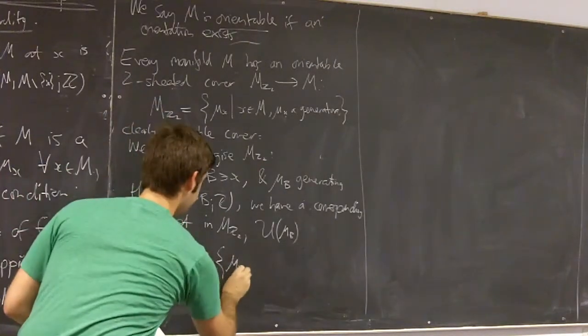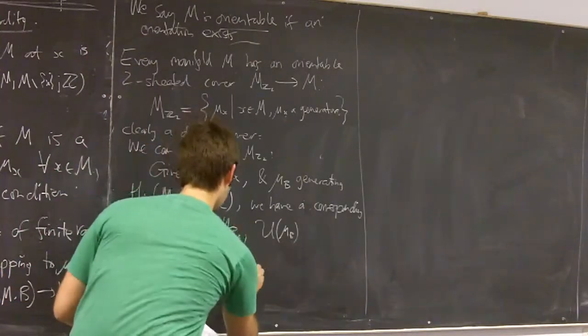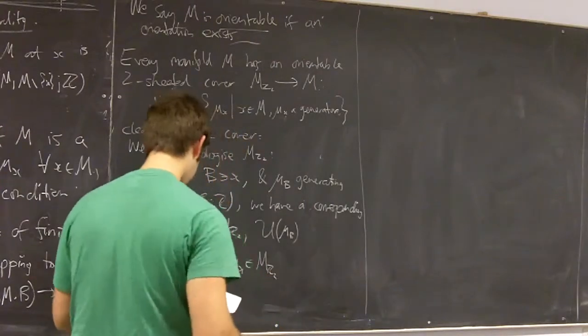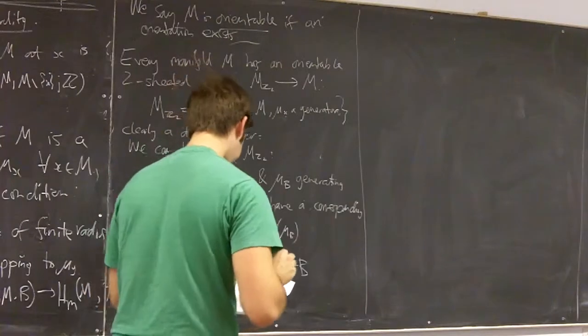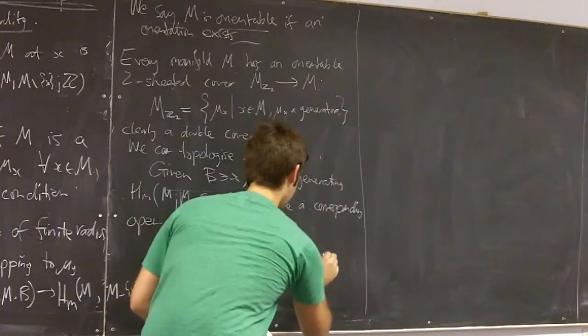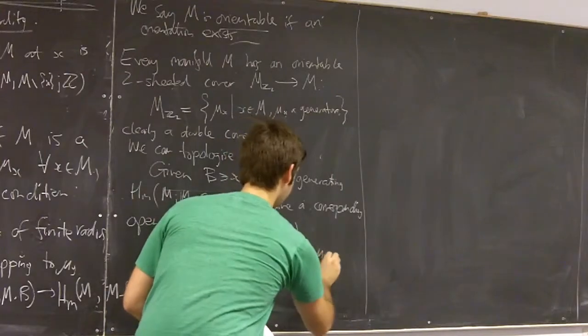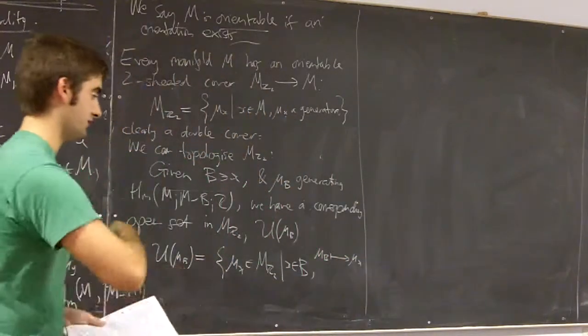it's just the set of all these local orientations μ_X considered as points in this covering space such that X is in the ball B and well μ_B mapped to μ_X under this canonical map